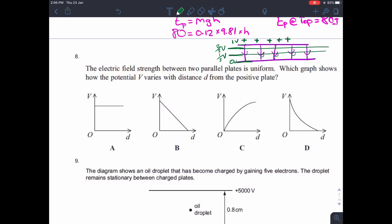So if we take this as the positive plate, how does the potential vary with distance? Well, it's going to decrease and it's going to decrease linearly. It's going to go one volt, two thirds of a volt, one third of a volt, zero volts. So it's decreasing linearly. And the only one that decreases linearly is B.